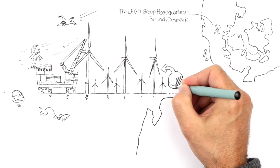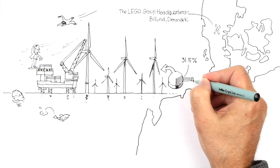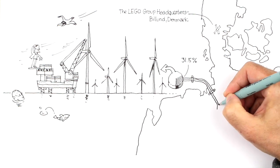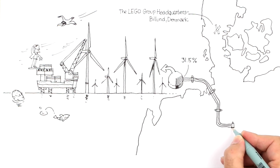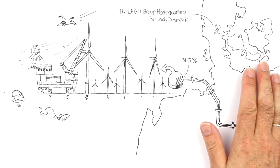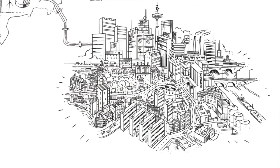Through Kirkby AS, the Lego Group owns 31.5% of the wind farm. Lego Group owned turbines can produce enough energy to power the equivalent of 100,000 homes annually.